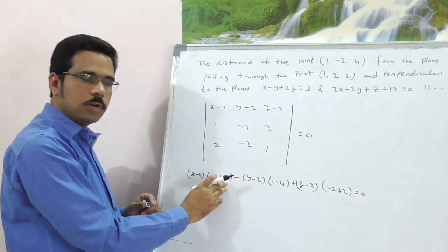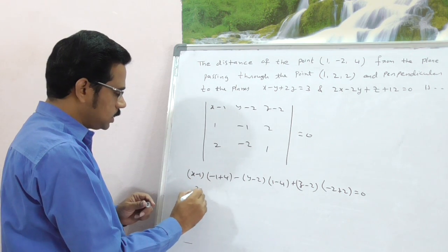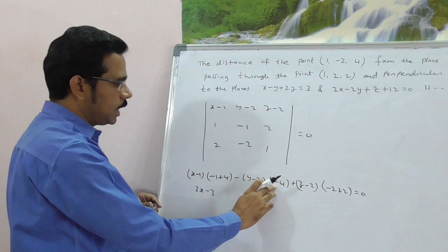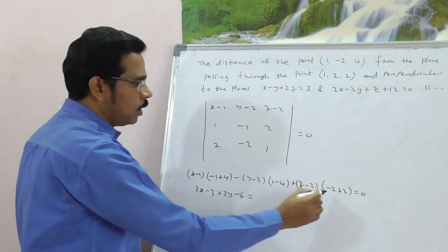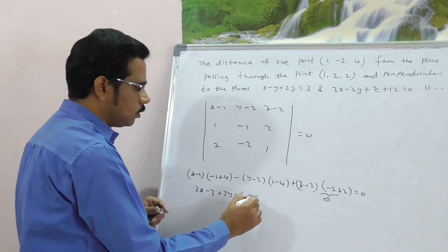Here it is, -1 + 4 is 3. Multiply by 3, this is 3X - 3. Here it is -3 - 1 minus plus 3Y - 6 is equal, -2 + 2 is 0. The complete value is 0.